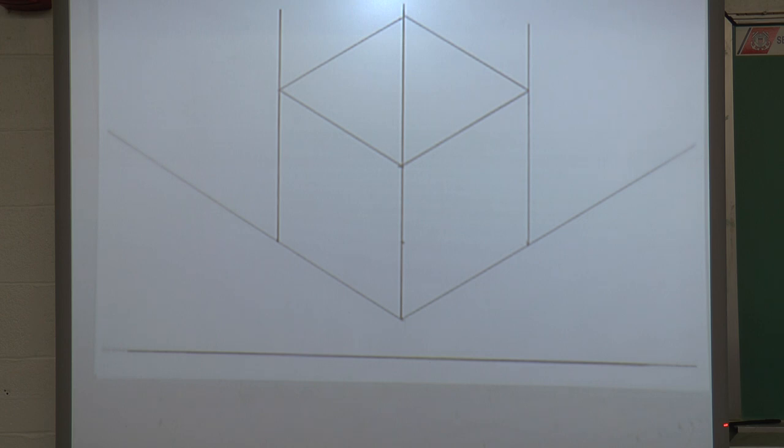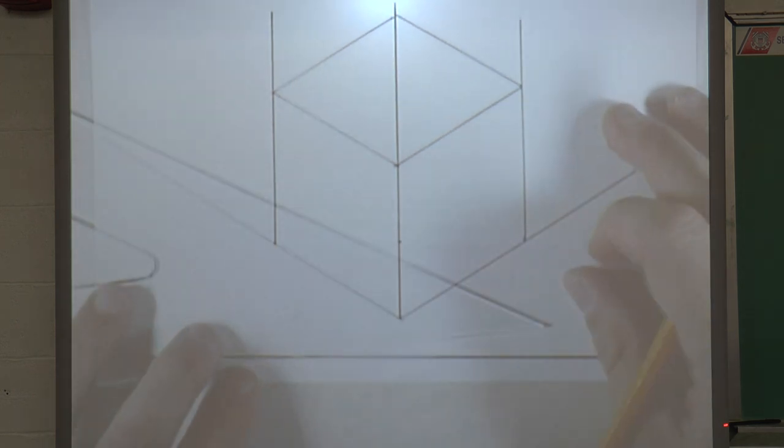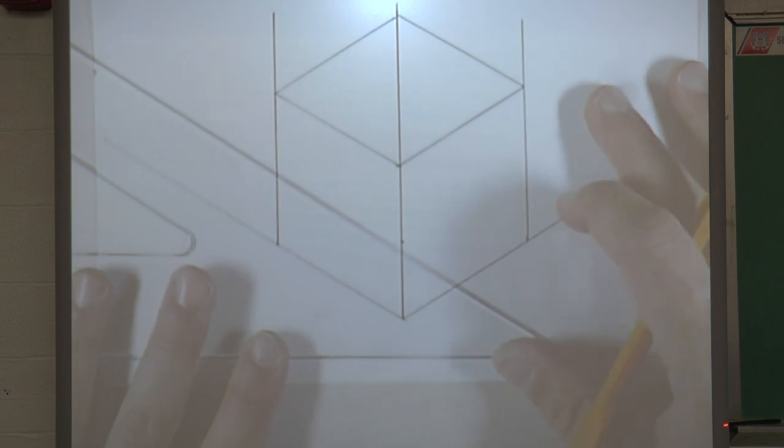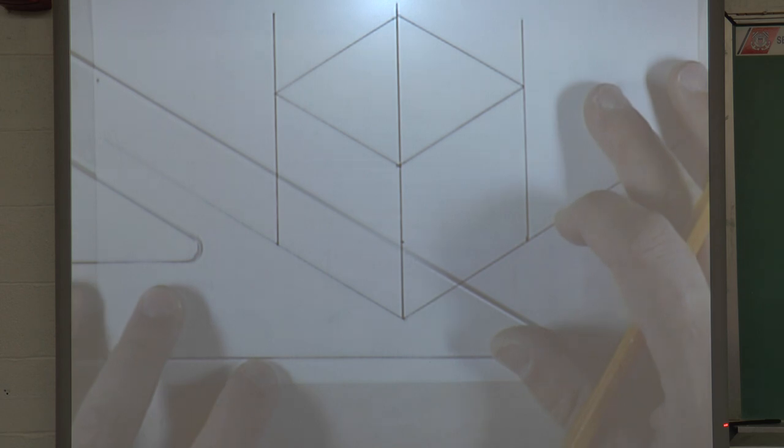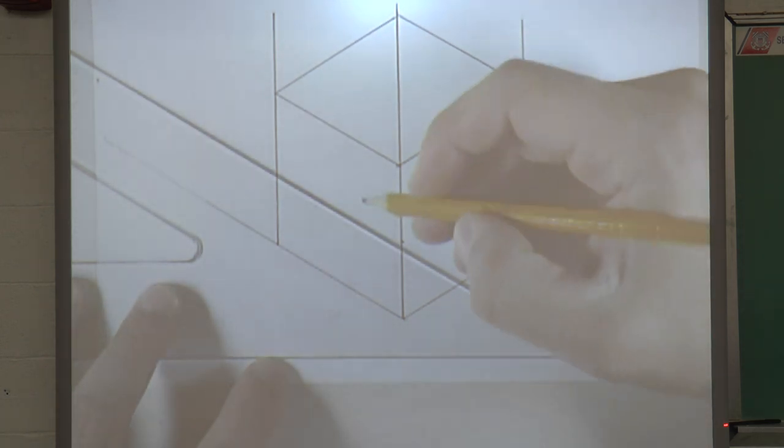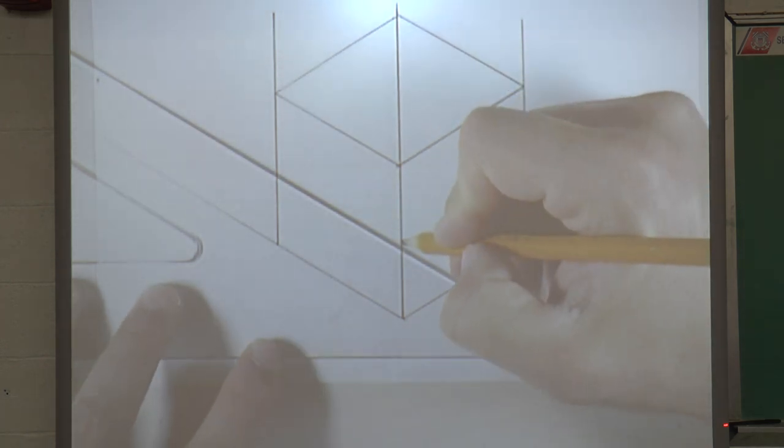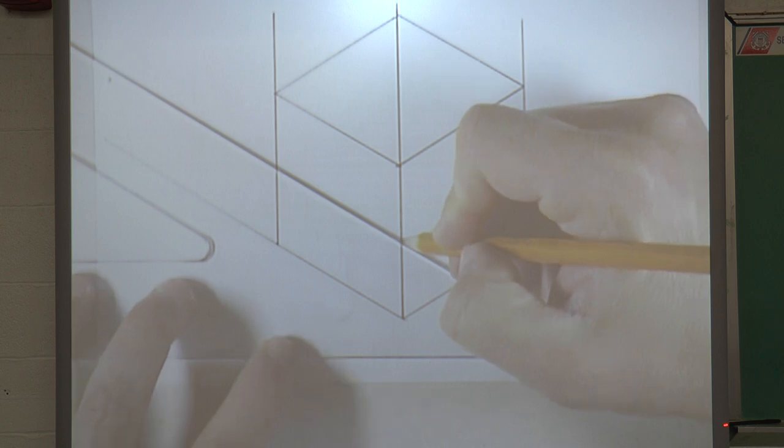Believe it or not, I don't need the ruler anymore. Now, what I'm going to do is take my triangle. Make sure I'm on a 30-degree angle. Basically, my triangle always goes on the baseline no matter what I'm doing. I'm going to start by taking this line, bringing it down.